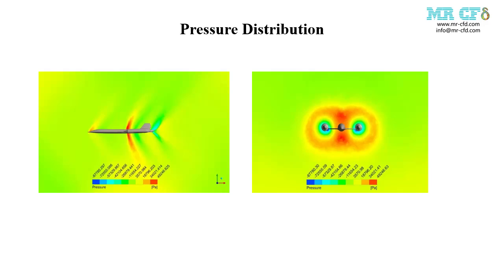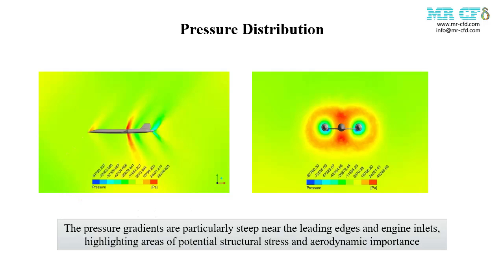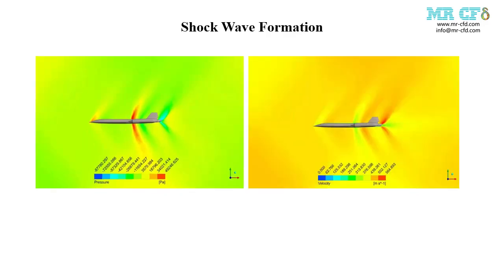A high pressure region is observed at the aircraft's nose, indicative of a bow shock formation. This is a characteristic feature of supersonic flight where the air ahead of the aircraft is compressed rapidly. The pressure gradients are particularly steep near the leading edges and engine inlets, highlighting areas of potential structural stress and aerodynamic importance.